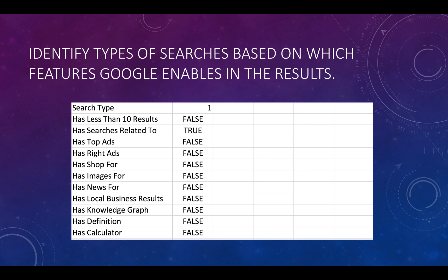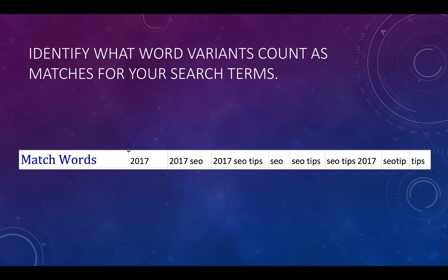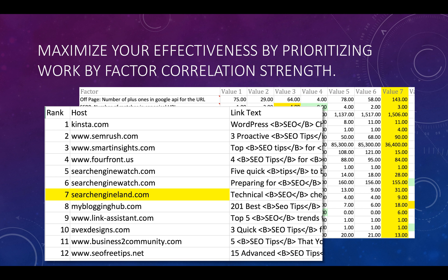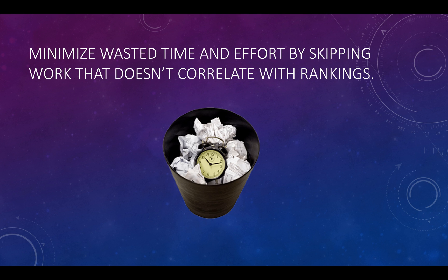You can identify the types of searches based on which features Google enables in the search results. You can identify which word variants count as matches for your search terms. You can maximize your effectiveness by prioritizing work by factor correlation strength.